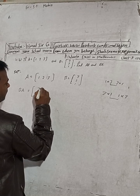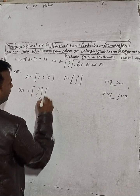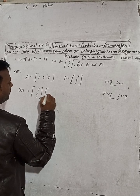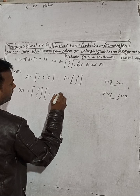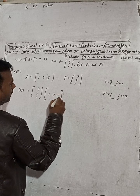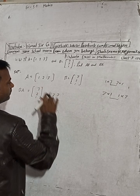Now for B·A, B comes first. B is [3, 2, 1] as a column matrix, and A is [1, 2, 3] as a row matrix.